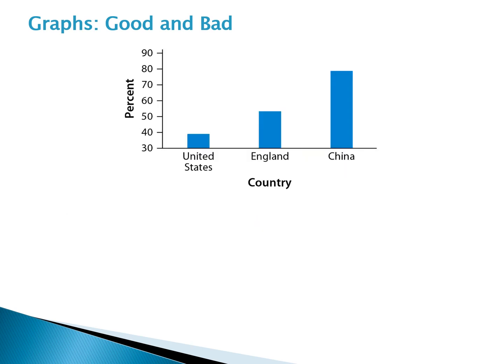Lastly, here's another really common issue we'll see in graphical displays — you'll see it on news shows and in magazines. This is the same data set about the proportion of adults in these countries who prefer to shop online. The area rule isn't a problem anymore because the bars have the same width, but what is a problem is that the scale on the left does not go to zero — it starts at 30. Because of this, it looks like China is about five times as big as the US, but that's not actually the case.